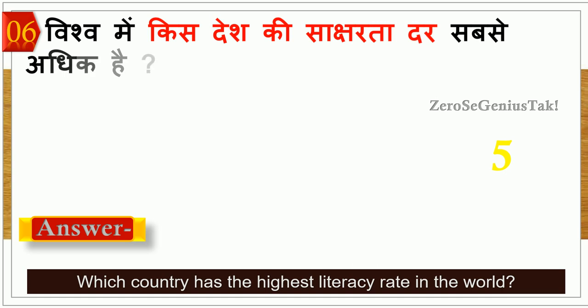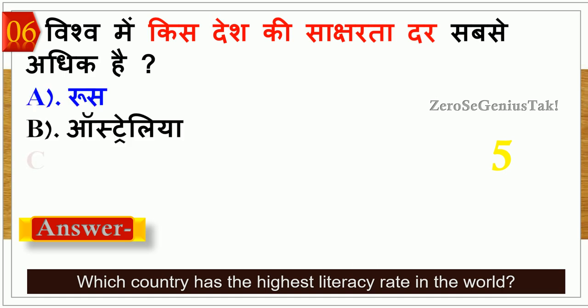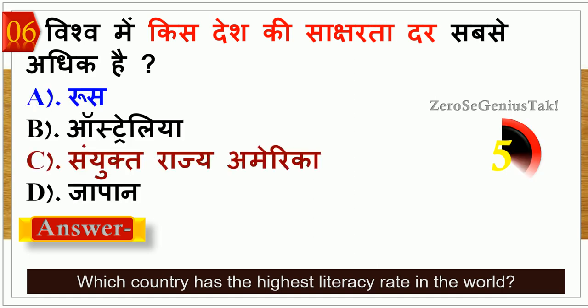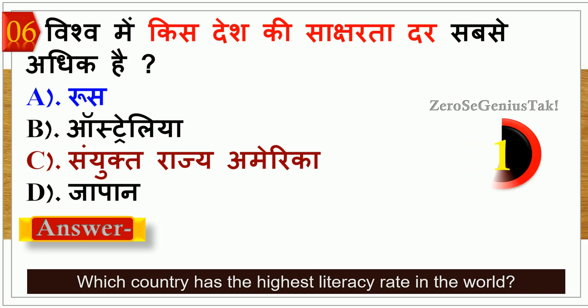पूरे विश्व में किस देश की साक्षरता दर सबसे अधिक है? यानी की highest literacy rate — इसका सही जवाब होगा option number A.